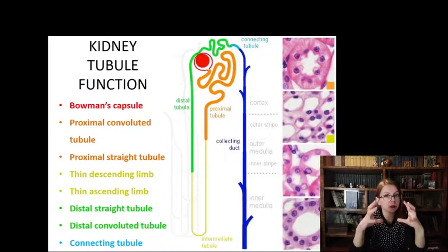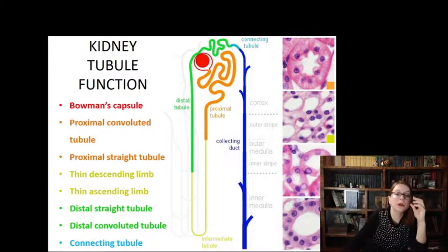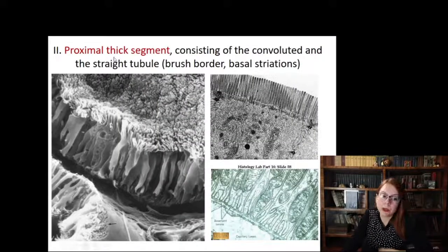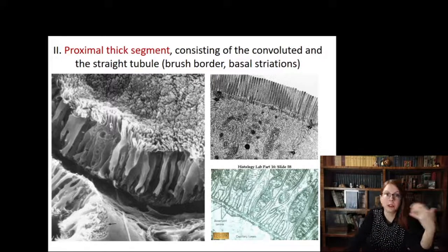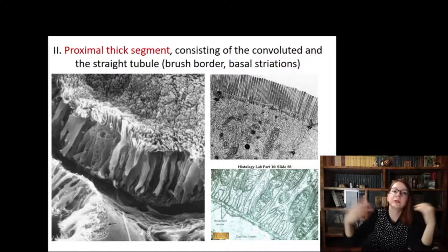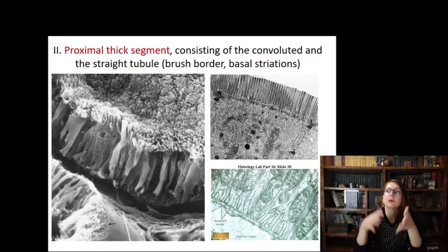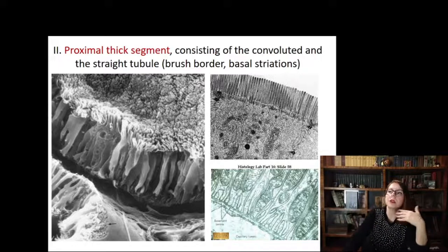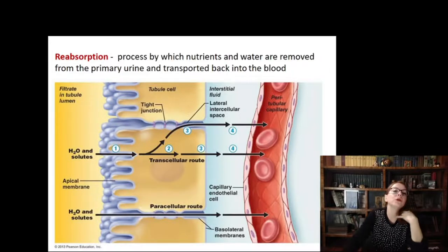After discussing the Bowman's capsule as the primary site of urine formation, urine enters the proximal convoluted and straight tubules. The proximal thick segment resembles the duodenum in structure: just as the duodenum receives food from the stomach and actively absorbs nutrients, the proximal convoluted tubule receives primary urine from the Bowman's capsule — primary urine rich in nutrients — so lots of substances must be reabsorbed back into the blood. The process occurring here is reabsorption.